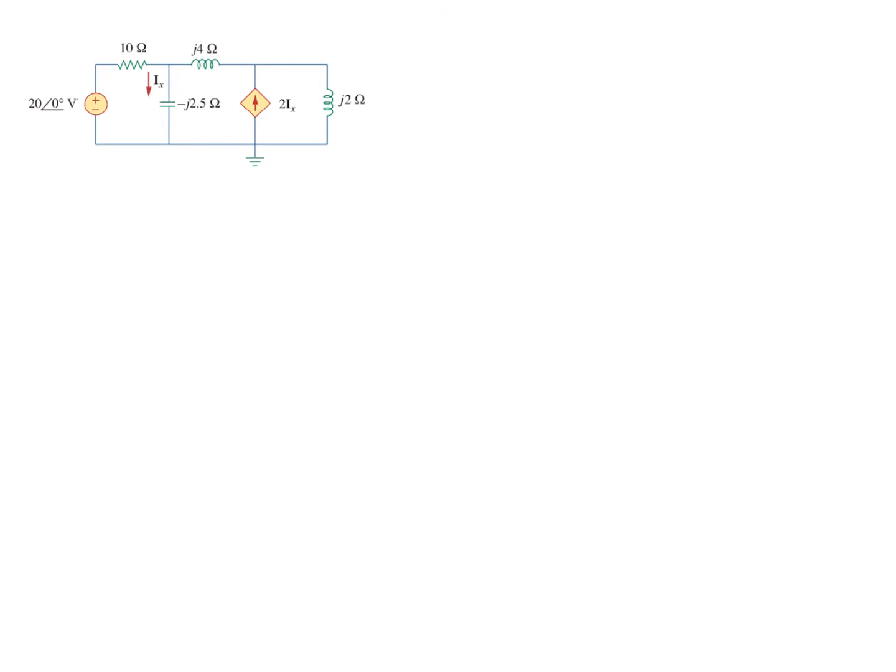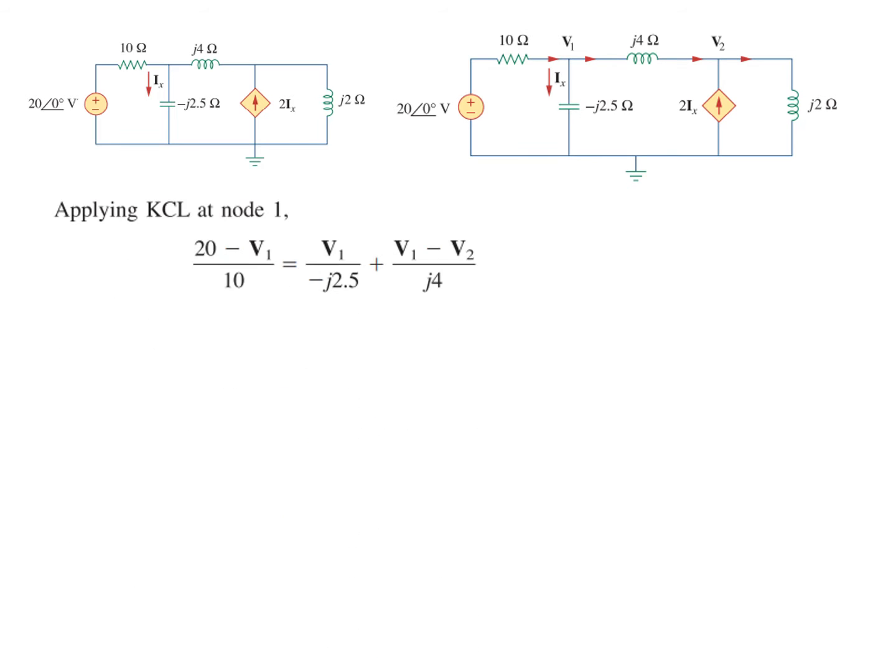Now for nodal analysis, first we identify the nodes. This is the reference node, this is node number one, and this is node number two. We'll call their voltages v1 and v2. We've also marked the current directions on our own. At node number one, current entering equals current leaving.